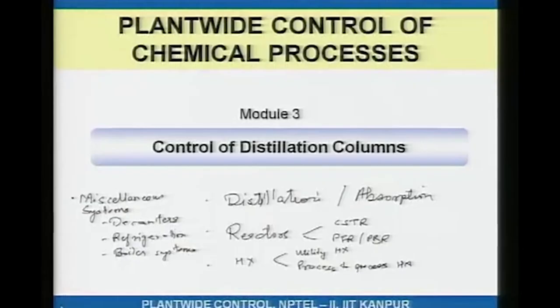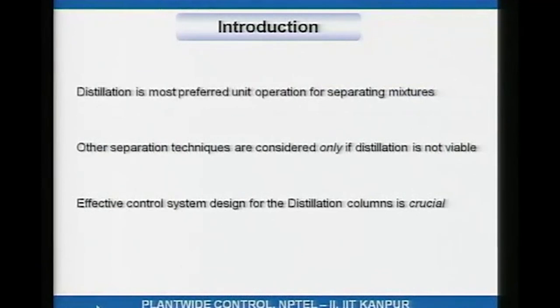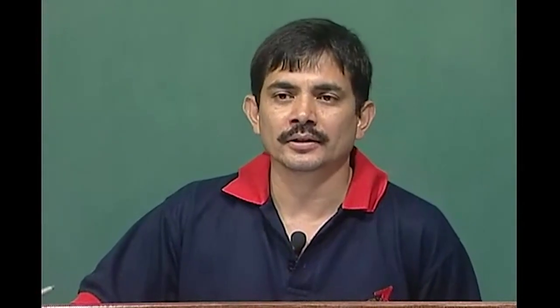Today's next 5 to 8 lectures will be on the control of distillation columns. Distillation is the most preferred unit operation for separating mixtures. We need to separate mixtures because the effluent from a reactor will always be a mixture of products and unreacted reactants. It will be very rare that the effluent from the reactor is a pure stream that can be sold in the market, so some sort of separation is necessary.